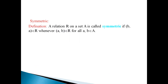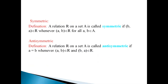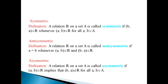The next property is symmetric. The definition of a symmetric relation is: a relation R on set A is called symmetric if (A, B) belongs to relation R whenever (B, A) also belongs to relation R, for all A and B. Then antisymmetric: a relation R on set A is called antisymmetric if A equals B whenever both (A, B) and (B, A) are present in the relation. Asymmetric is the opposite of symmetric: a relation R on set A is called asymmetric if (A, B) belongs to R and (B, A) does not belong to R, for all A, B belonging to set A.